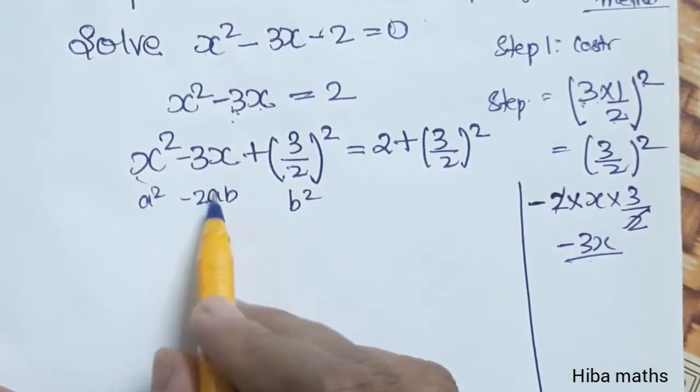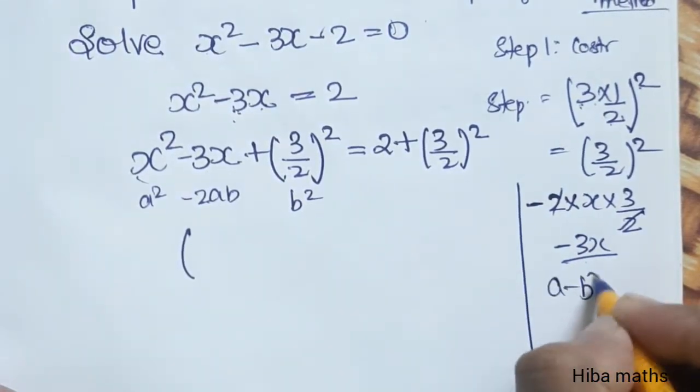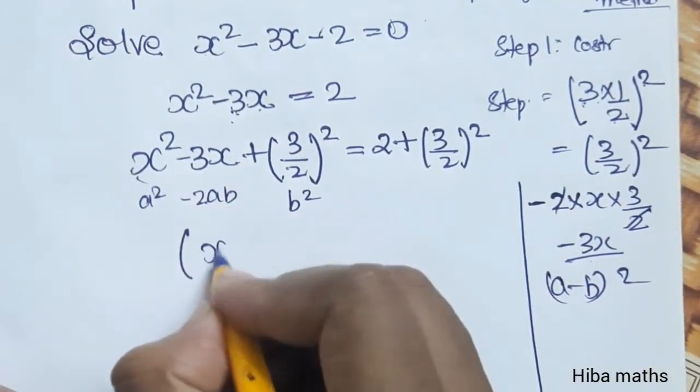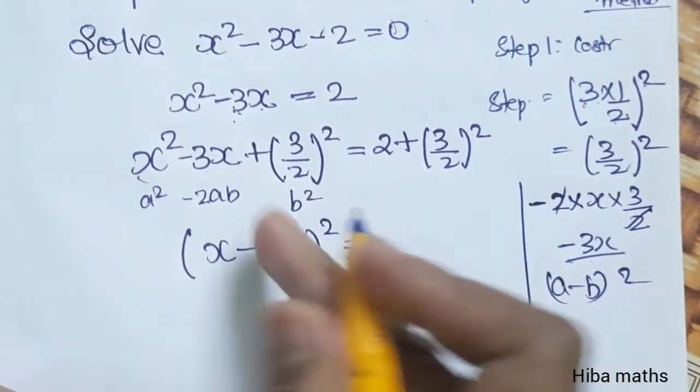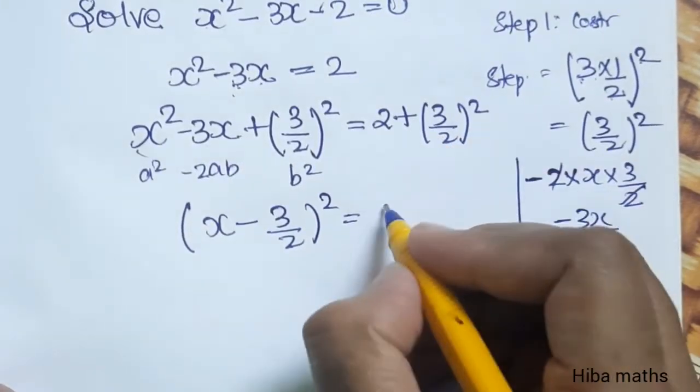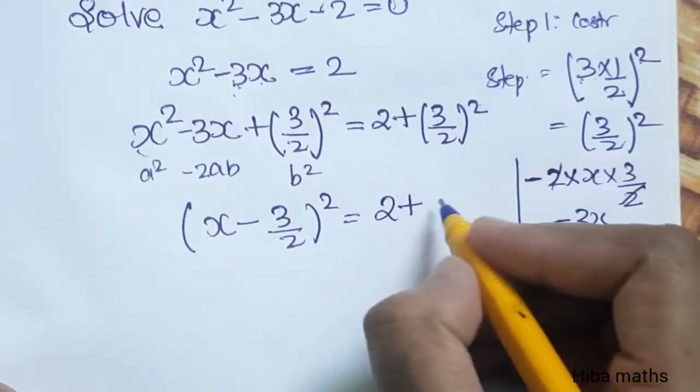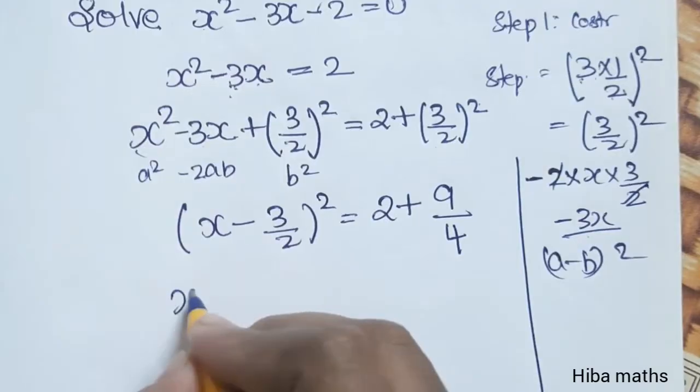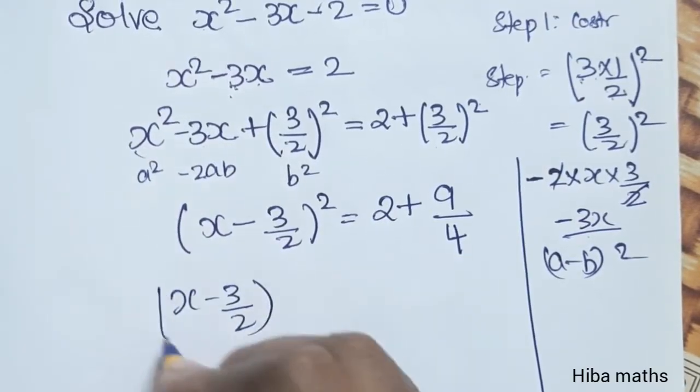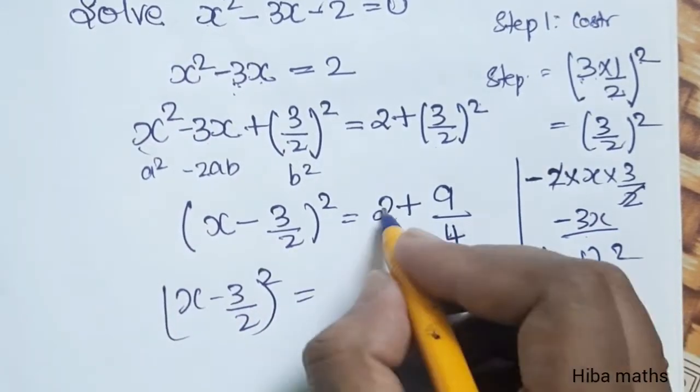So we have a² - 2ab plus b². So x² - 3x plus (3/2)² equals 2 plus (3/2)². This becomes (x - 3/2)² equals 2 plus 9/4, which equals 17/4.